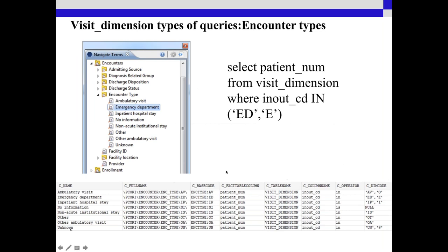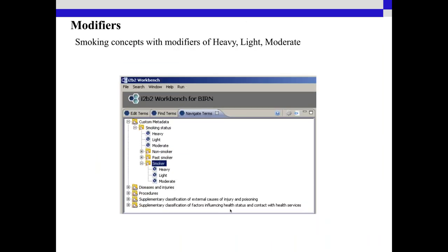The visit_dimension table contains one encounter number associated to multiple patient observation facts. If you went into the emergency room or were an inpatient, you'd have one encounter number and all records for that visit would share the same patient number. You could then query what a patient's A1C was during a specific visit. Modifiers can also represent things like smoking status — heavy, light, or moderate.